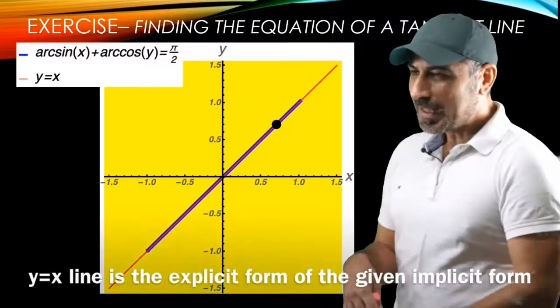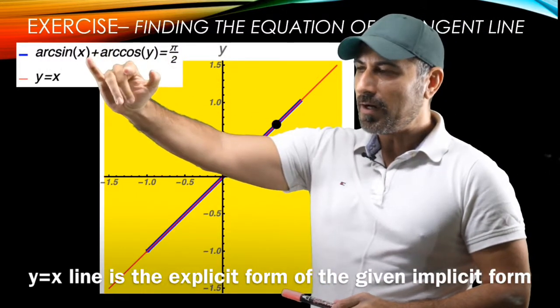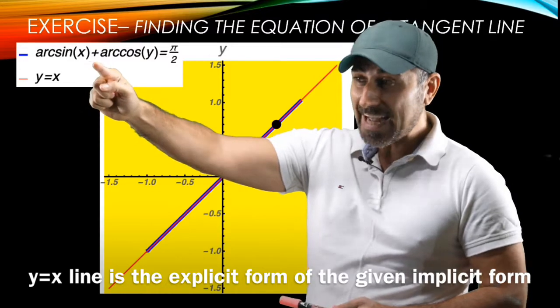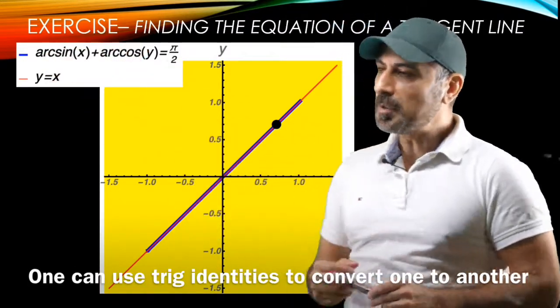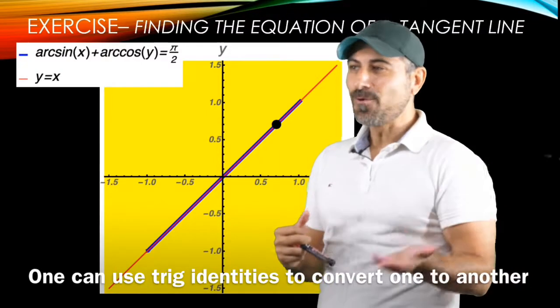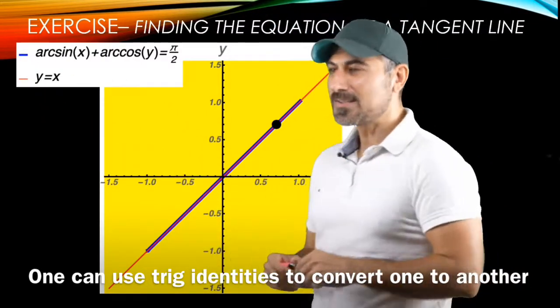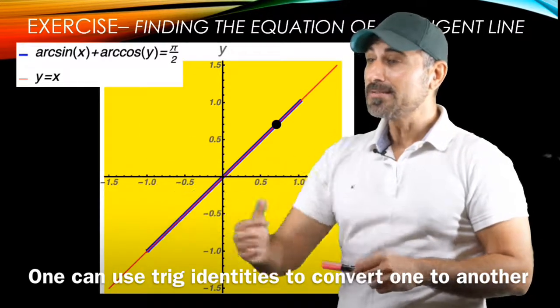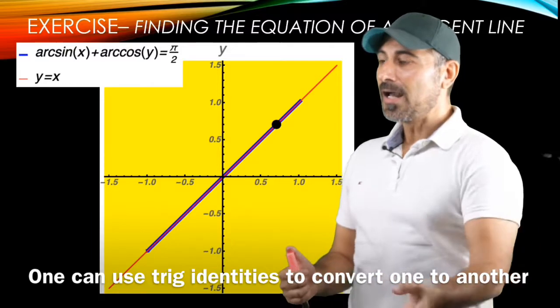So it's a very interesting observation here that the implicit form of y equals x is exactly equal to this. So if you really want to convert this implicit form to the explicit form, we're going to get the equation of the line to be y equals x. This is exactly what we derived in the previous slide once we do the cancellation in the equation of the line.